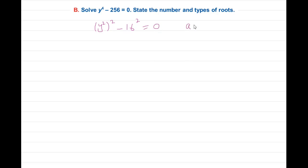You remember the rule: a squared minus b squared equals (a plus b)(a minus b). We have to split it in a similar way. y squared minus 16, and y squared plus 16 equal zero.